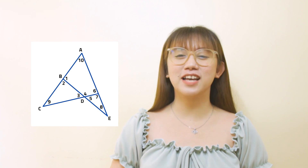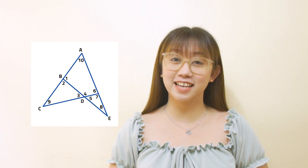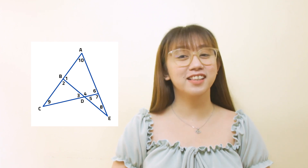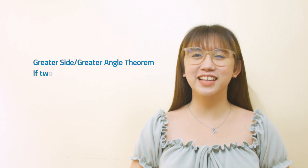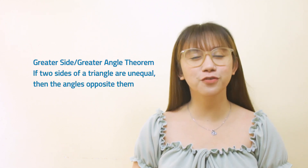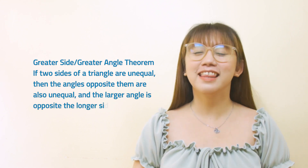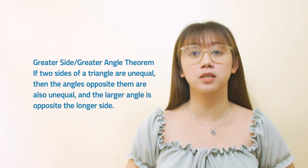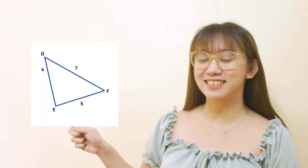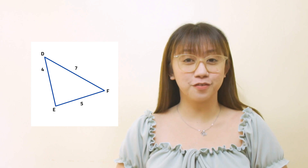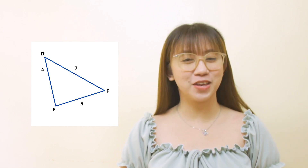Further, since angle 5 and angle 3 are vertical angles and hence congruent, angle 3 is also smaller than angle 6. The greater side or greater angle theorem tells us that if two sides of a triangle are unequal, then the angles opposite them are also unequal, and the larger angle is opposite the longer side. The sides in increasing order are sides ED, EF, and DF. By this theorem, the angles from smallest to largest are angle F, angle D, and angle E.